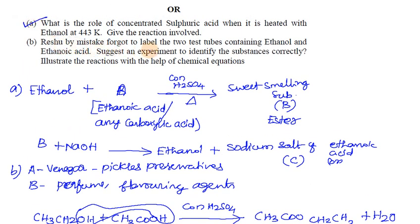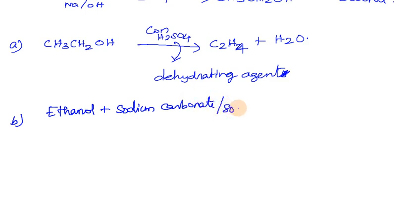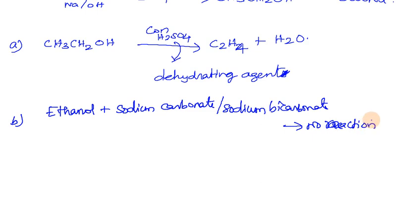Ratio forgot to label two test tubes containing ethanol and ethanoic acid — suggest an experiment to identify them. We add sodium carbonate or sodium bicarbonate to both test tubes. Ethanol shows no reaction with sodium carbonate or sodium bicarbonate, but ethanoic acid reacts and produces effervescence.